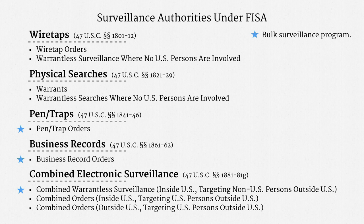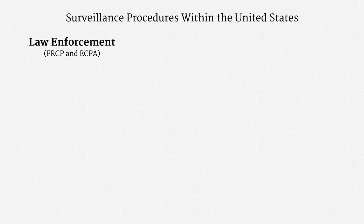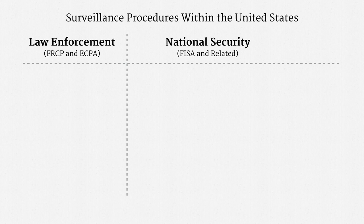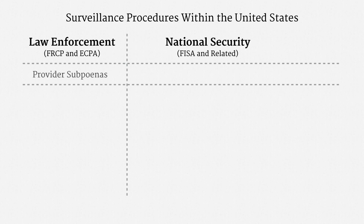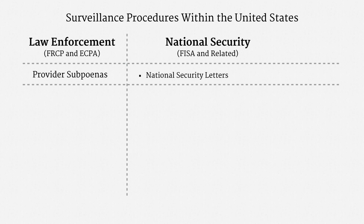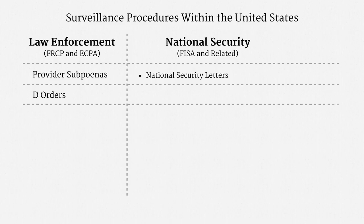To recap, let me compare the procedures for law enforcement under the Federal Rules of Criminal Procedure and the Electronic Communications Privacy Act to the national security procedures under the Foreign Intelligence Surveillance Act and related statutes. First up are provider subpoenas — those allow access to a limited subset of stored communications metadata. The closest national security analog is the National Security Letter, which isn't actually part of FISA but is closely related — it's a type of administrative subpoena. Next up are D orders, which allow access to all stored communications metadata. There, the closest national security analog is the FISA business records order.